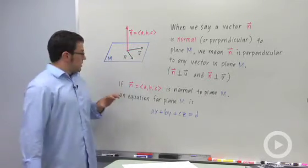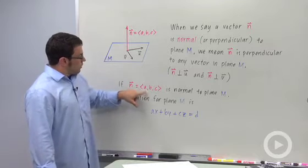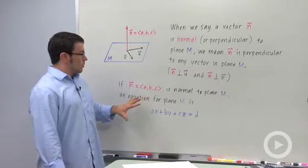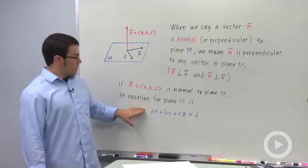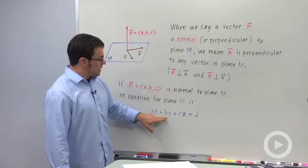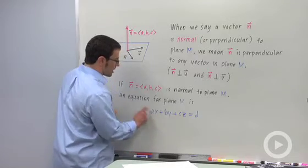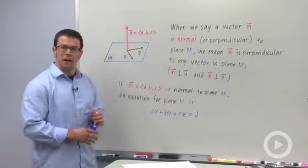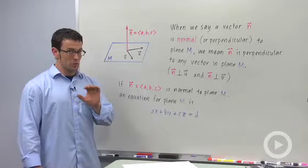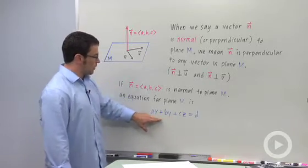So really easy result here. If n, which has components a, b, c, is normal to plane m, an equation for that plane is ax plus by plus cz equals d. These a, b, and c, these coefficients are exactly the components of the normal vector n. So it's really easy to come up with this part of the equation of a plane.